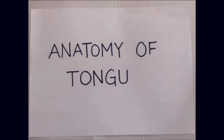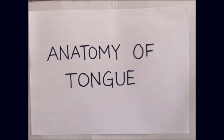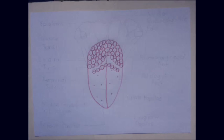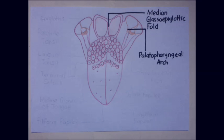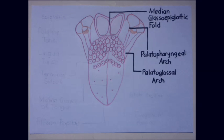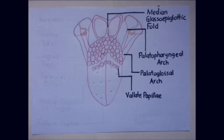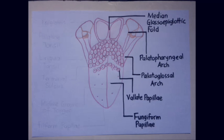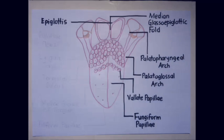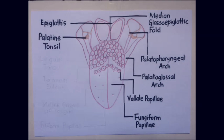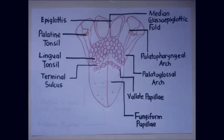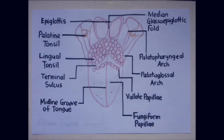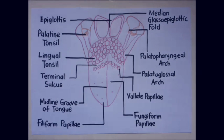The anatomy of the tongue. Key structures include: median glossoepiglottic fold, palatopharyngeal arc, palatoglossal arc, palapopuli, fungiform papillae, epiglottis, palatine tonsil, lingual tonsil, terminal sulcus, midline groove of tongue, and filiform papillae.